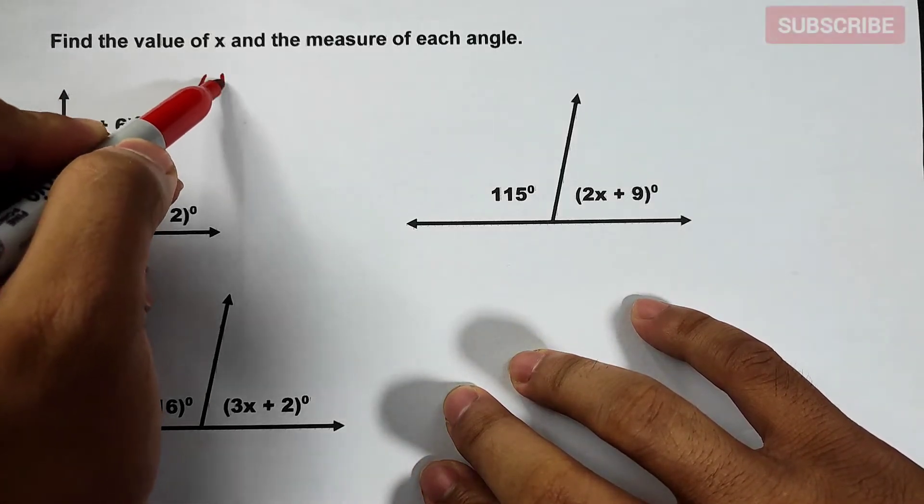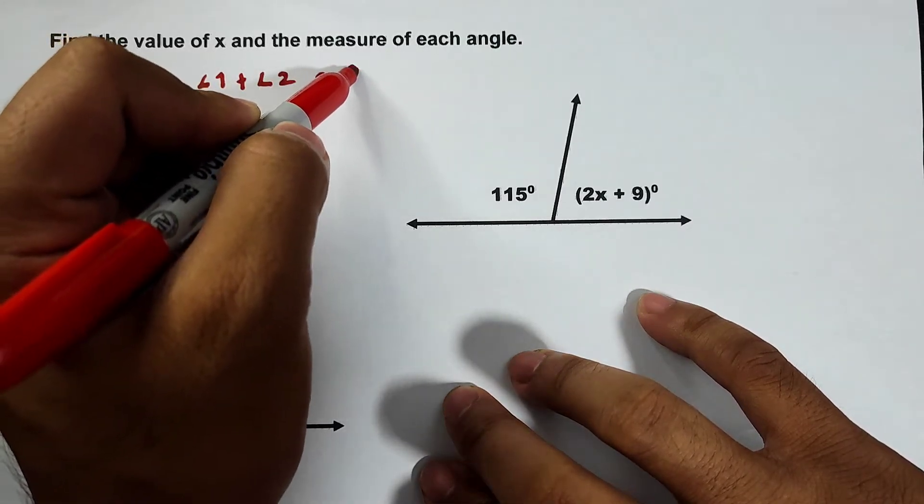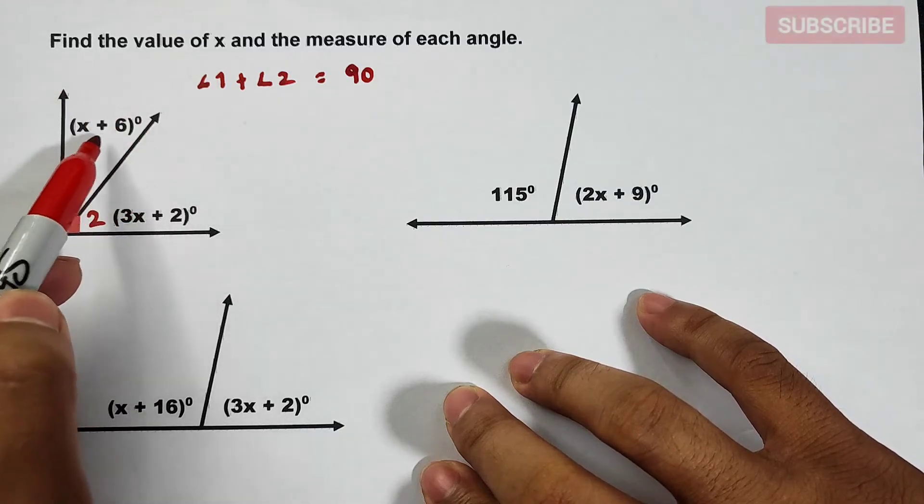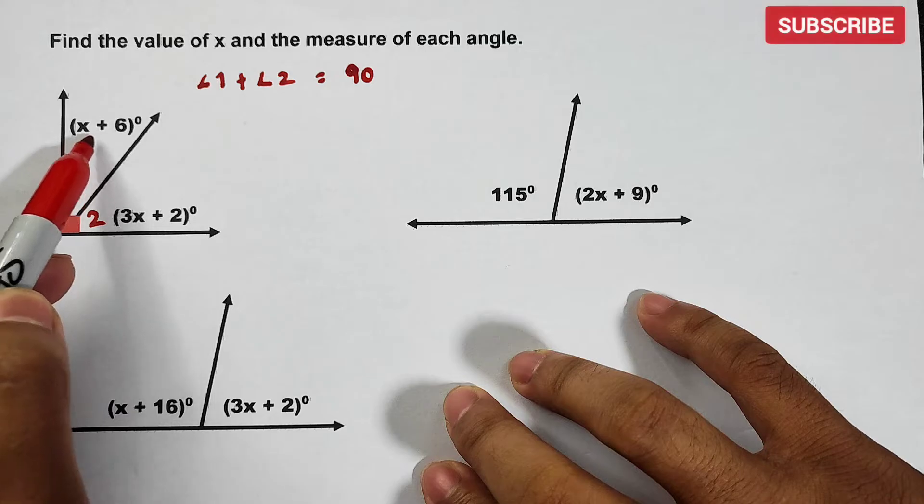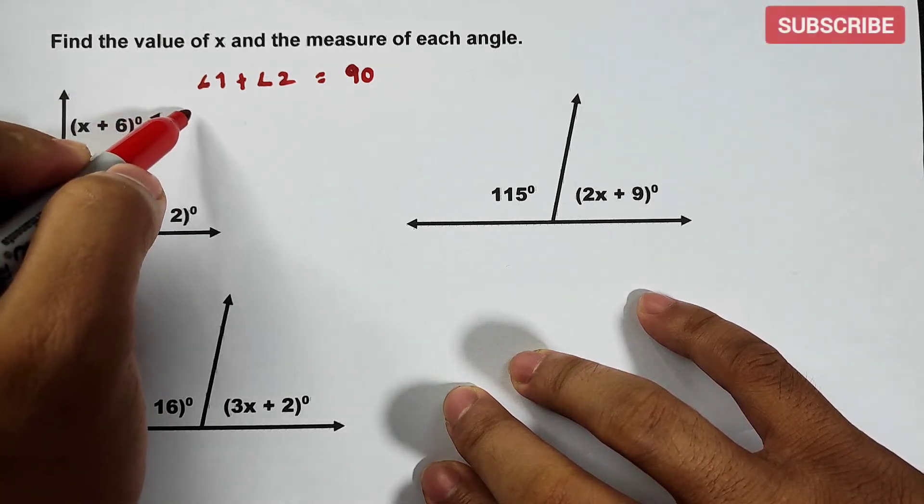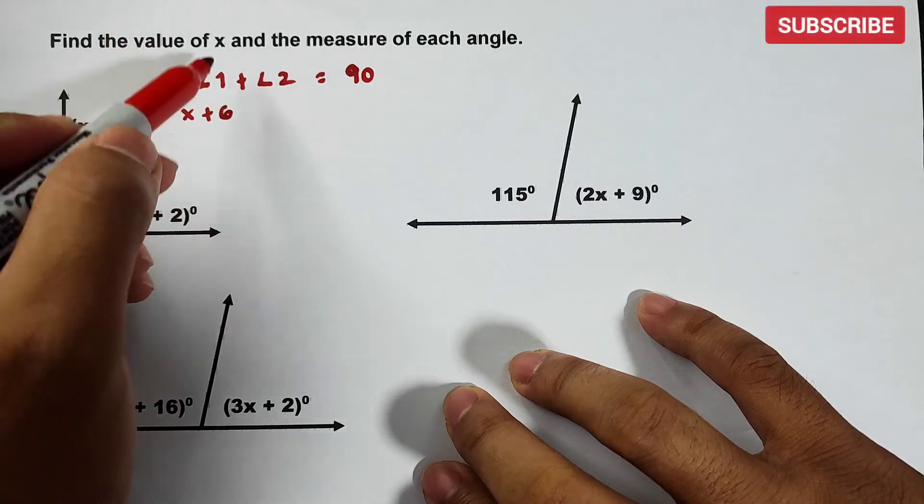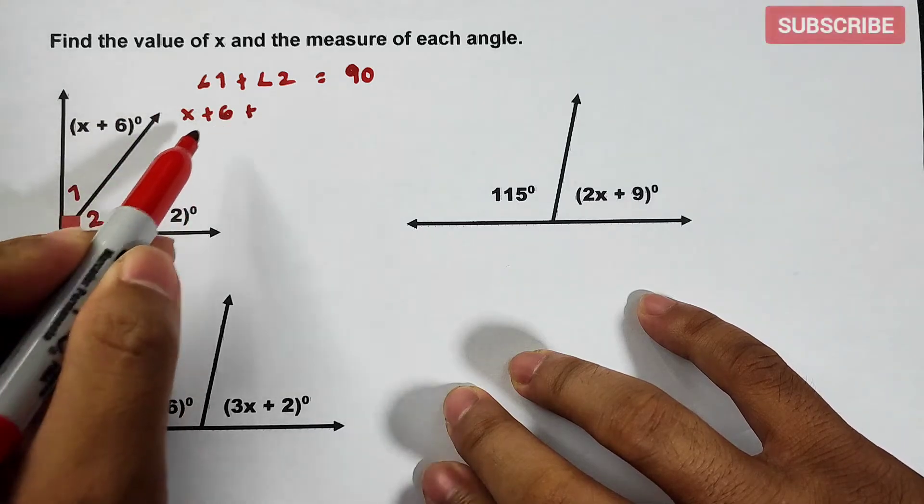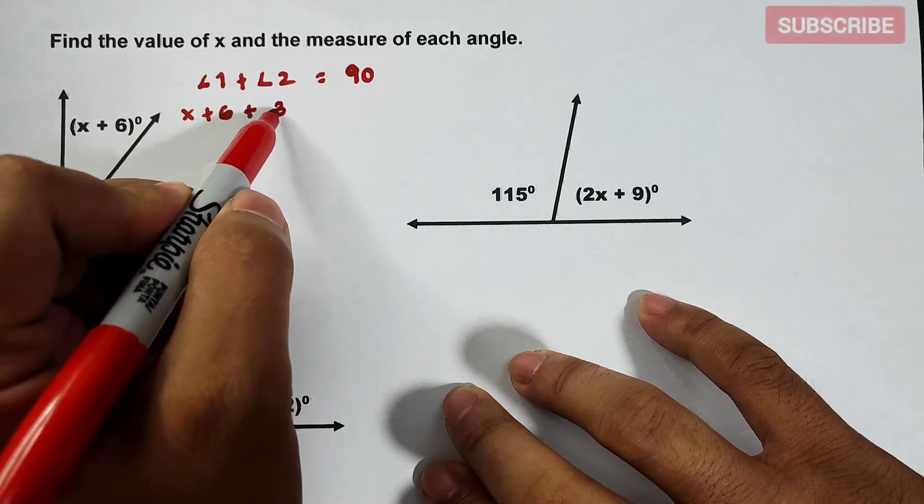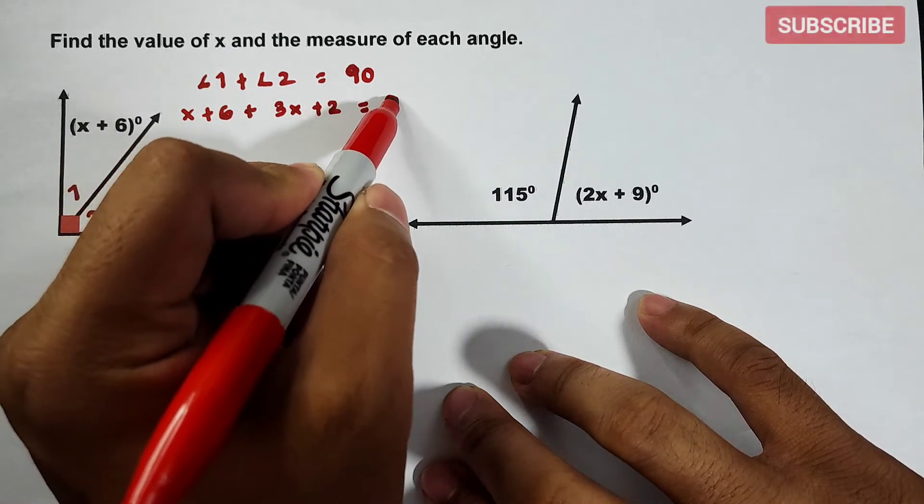We have angle 1 plus angle 2 is equal to 90 or 90 degrees. Let us use the expression here represented by this one. Your angle 1 is represented by x plus 6 degrees. So let's have x plus 6 degrees. So let's have x plus 6 plus your angle 2 is represented by 3x plus 2. We have 3x plus 2 is equal to 90.